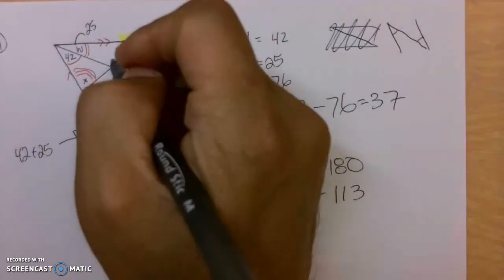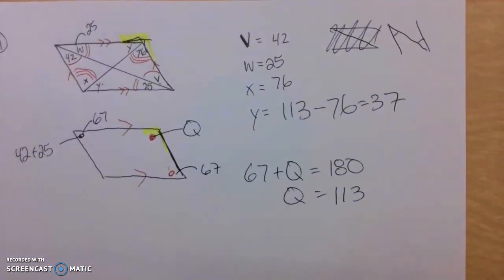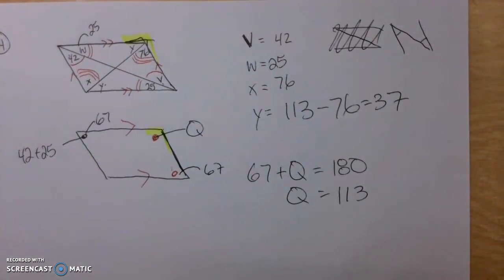Okay. And then, of course, this would also be 37 degrees down there. Use same side interior angles to help figure out that Q. Here we go. You can see it. You can do it.